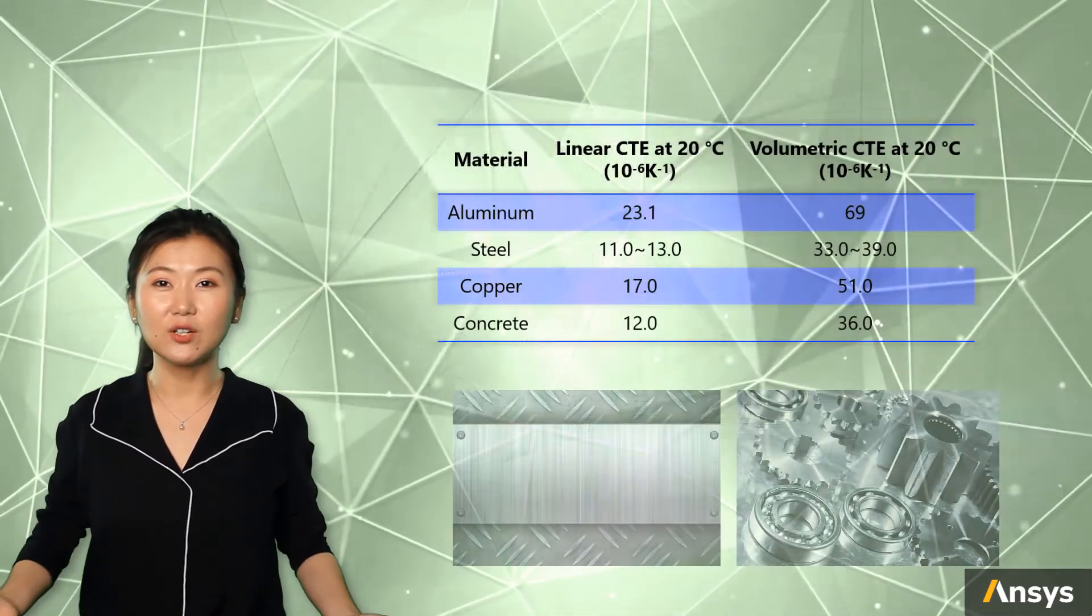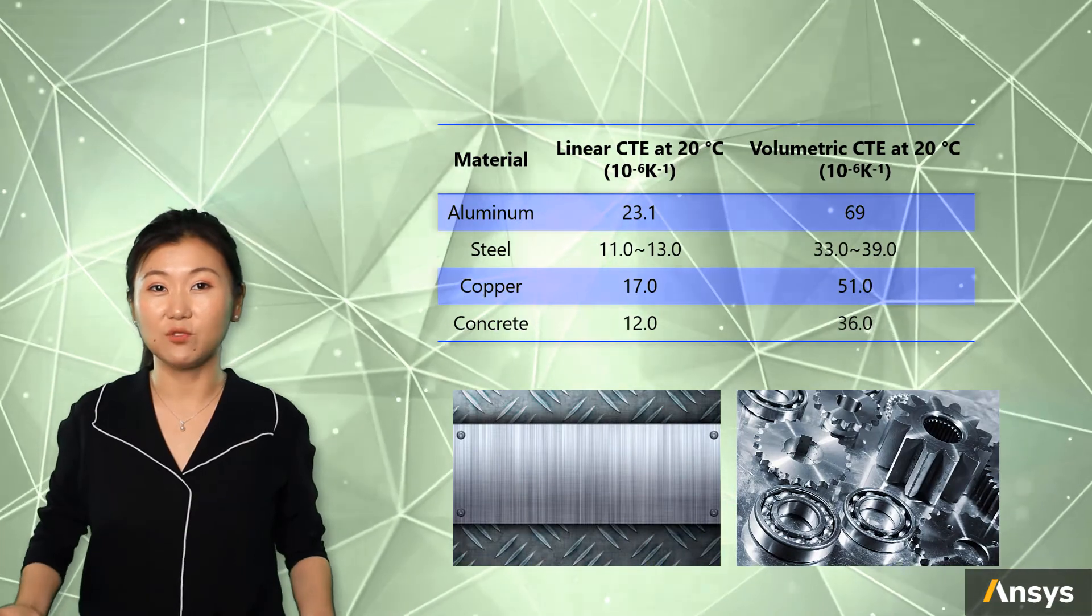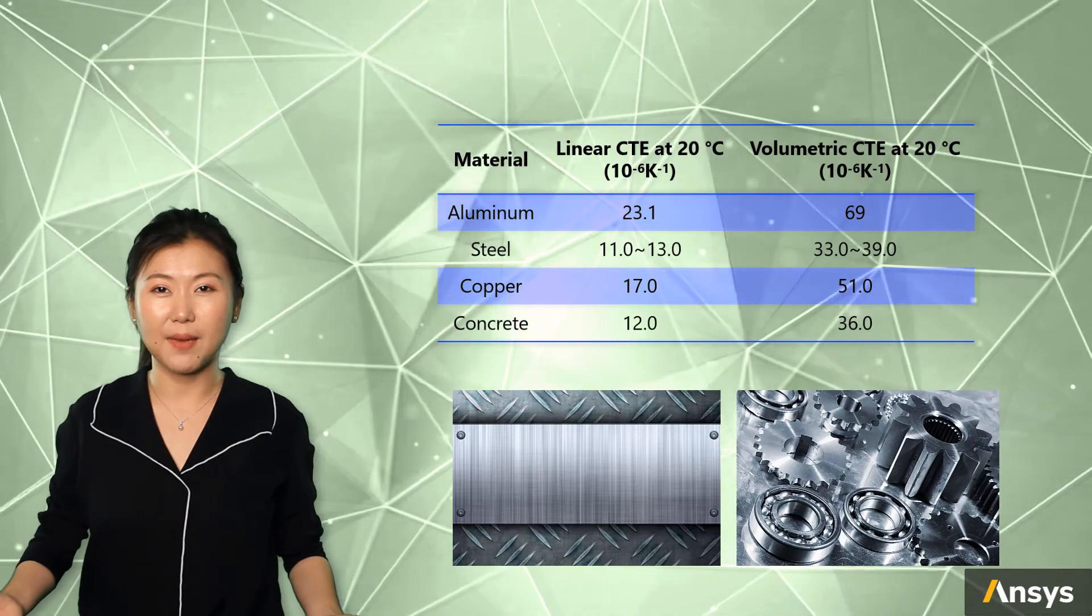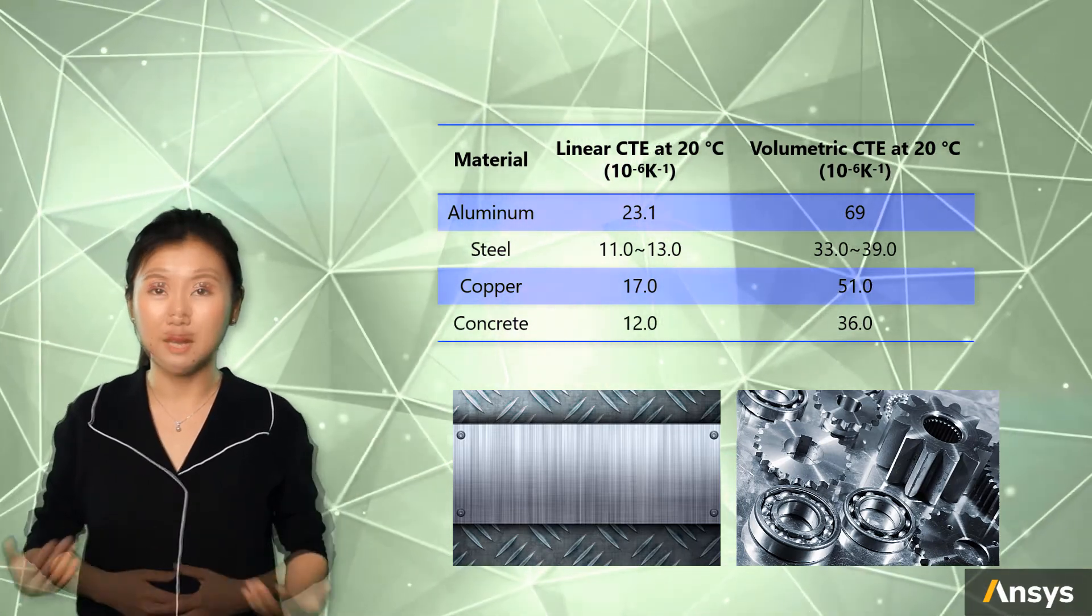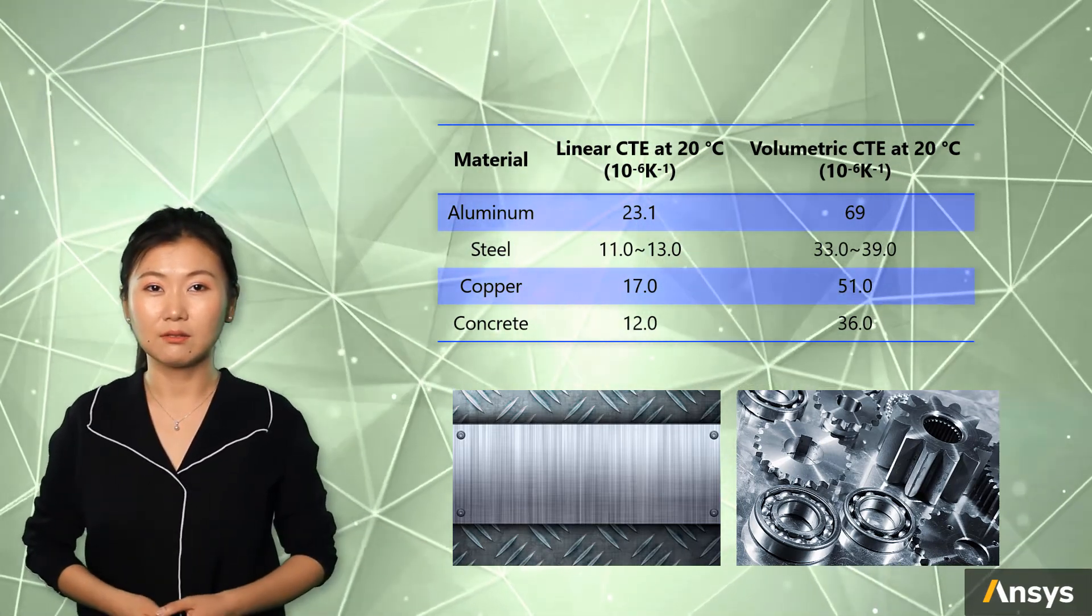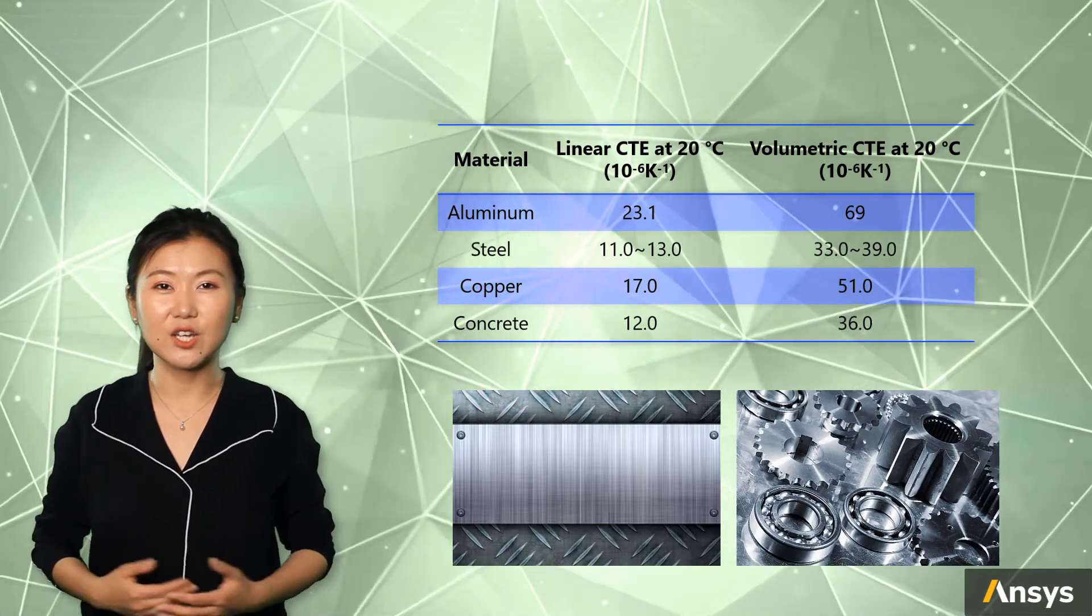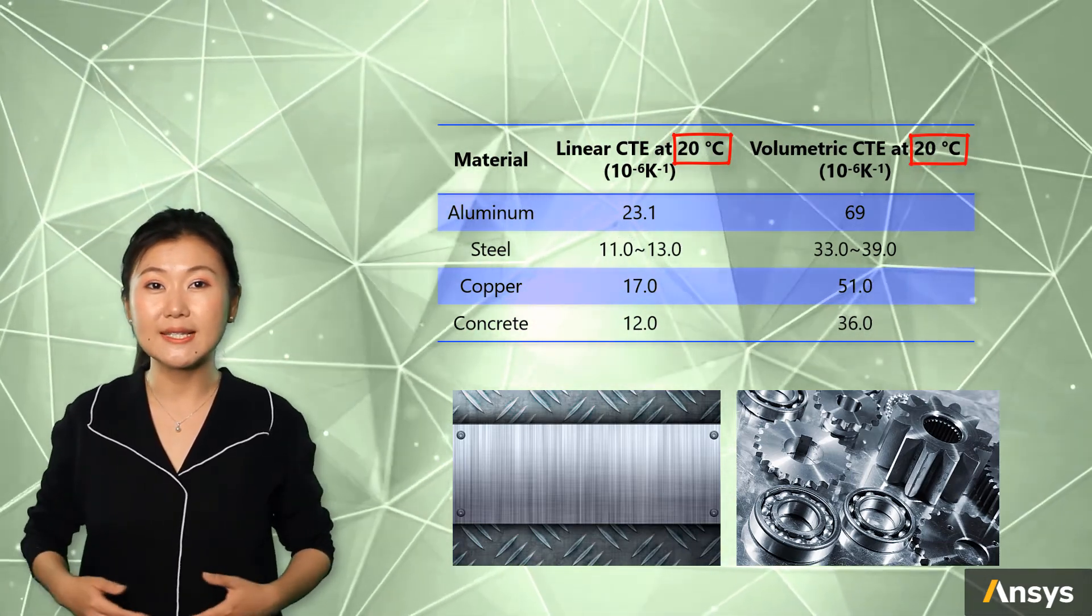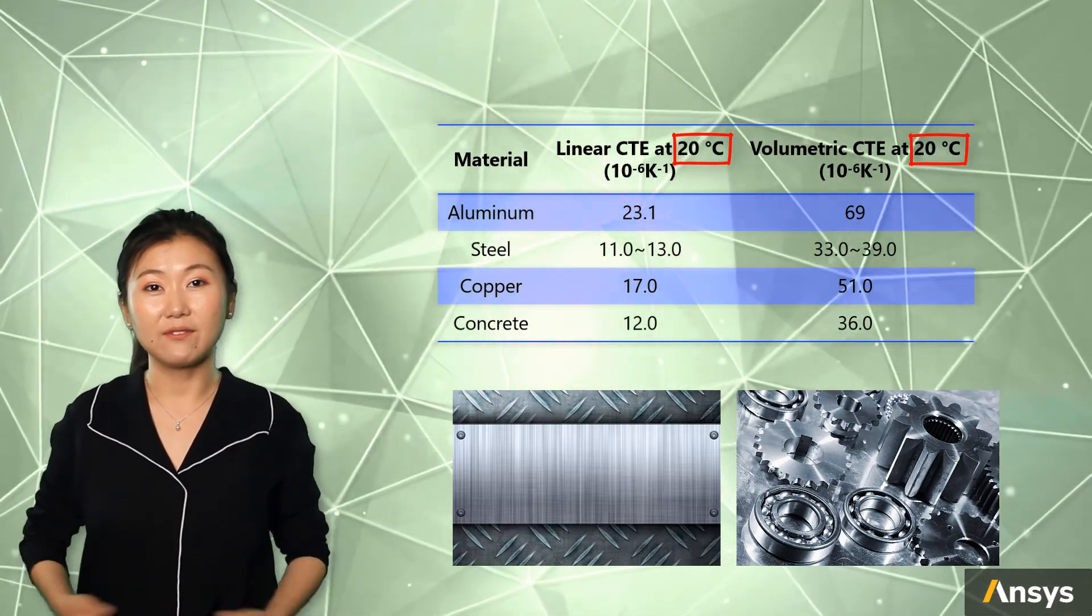Let's have a look at coefficient of thermal expansion for common materials. You can see that in general, aluminum expands more than steel with same temperature increase. Note that the CTE of these materials here are measured at reference temperature 20 Celsius degree.